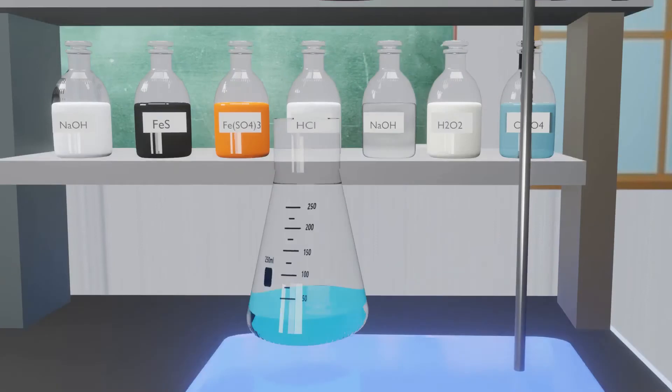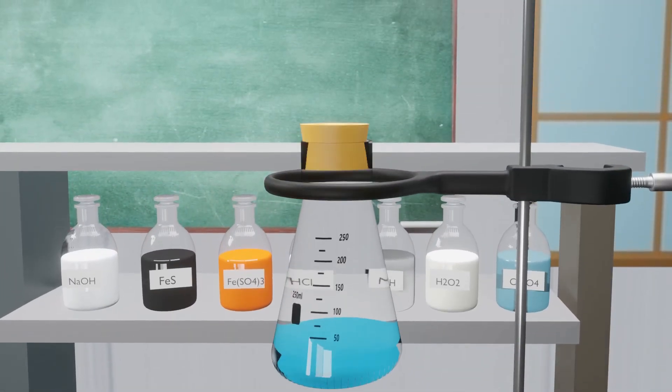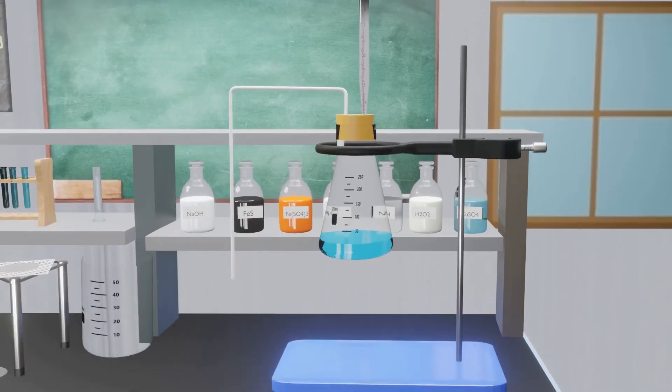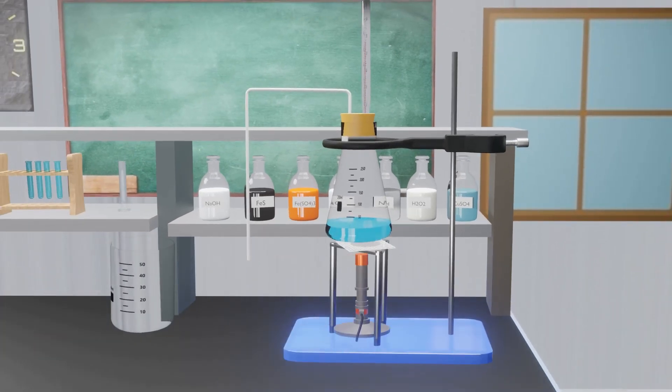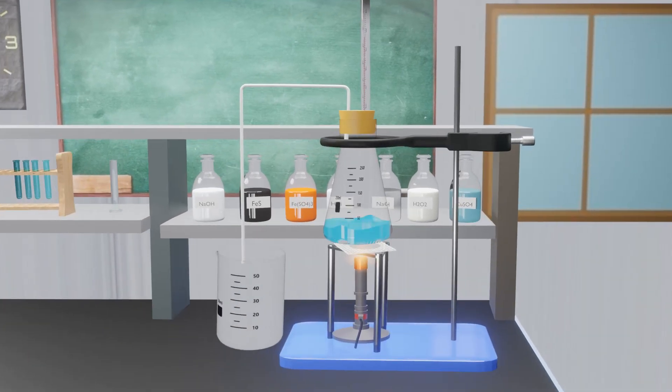Clamp the conical flask on iron stand with two-hole rubber cork. In one hole fix the thermometer and in the other one fix the delivery tube. Place a tripod stand and Bunsen burner under the conical flask.